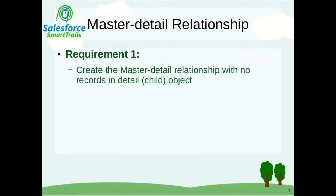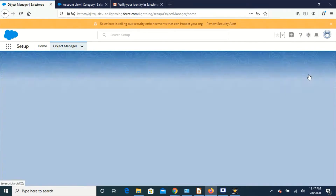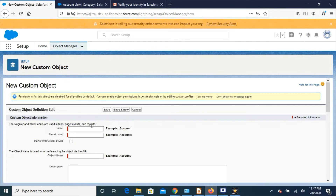So let's go to the requirement. Here we are going to create a master detail relationship with no records in the child object, so it is pretty simple. Let's go to our org and here I'm going to create a new custom object. Let's call this 'Category'.